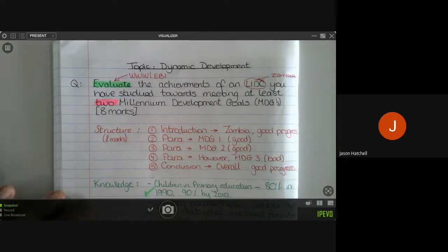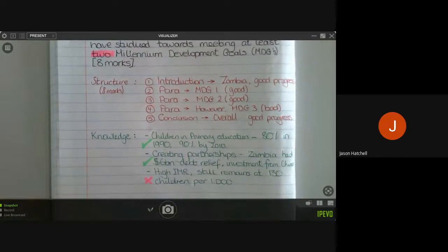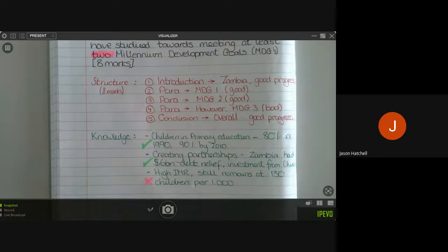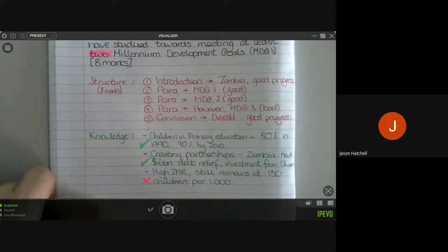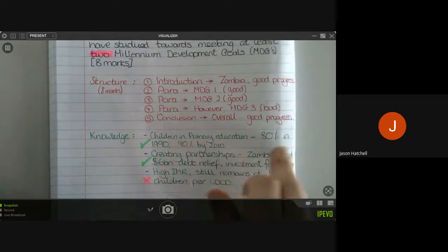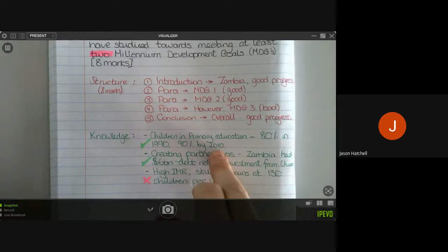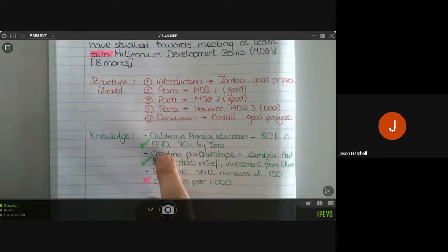And then finally, I have also got some knowledge here for you. So this is what I remembered from the lesson I did on Millennium Development Goals in Zambia. So I picked out two particular Millennium Development Goals that were really good and made good progress. So children in primary education—it was 80% in 1990 and it rose to 90% by 2010. And I've also picked out the creating global partnerships goal.